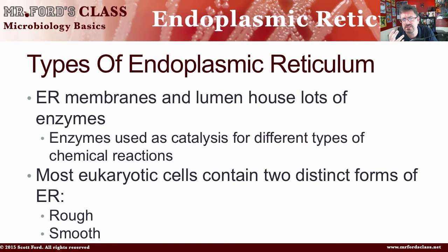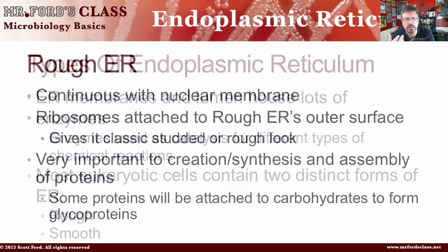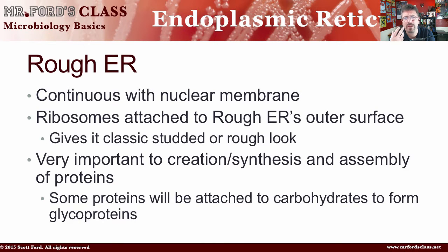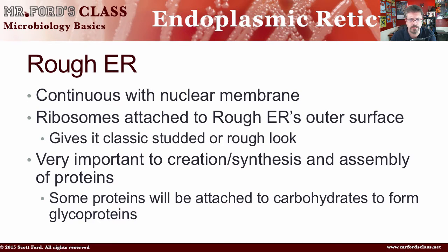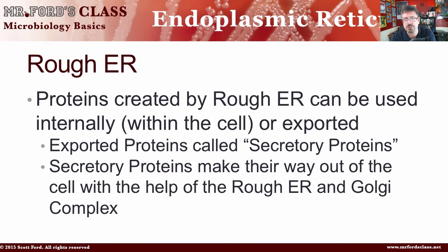Most eukaryotic cells contain two distinct forms of ER — which is probably what you remember from high school and middle school — rough ER and smooth ER. Rough ER is continuous with the nuclear membrane. It has ribosomes that attach to its outer surface, giving it that studded or rough look. It is very important to the creation, or synthesis, and assembling of proteins. Some proteins will be attached to carbohydrates to form glycoproteins. The proteins created by the rough ER are either used internally or they're exported — either used within the cell or kicked out.